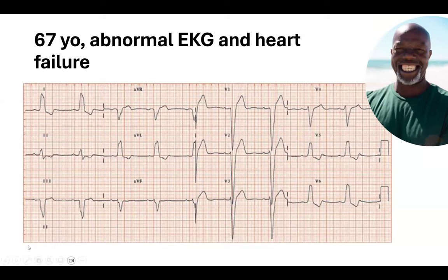We haven't reached the point where we can do His bundle or left bundle pacing with an ICD lead for two reasons. First, you need a stable lead that can handle the movements of the septum — current leads don't account for that fulcrum point. Second, the positioning of the RV coil is critical for defibrillation coverage of the ventricle. Placing the lead in the His or left bundle position doesn't give enough ventricular coverage for the device in your shoulder to effectively shock the patient. So for ICD leads, you want a more apical septal position.